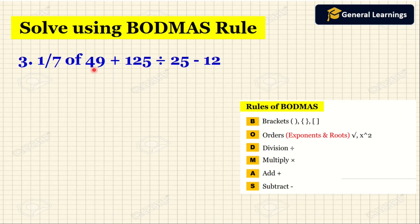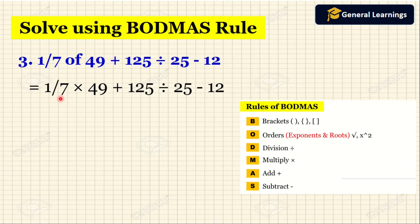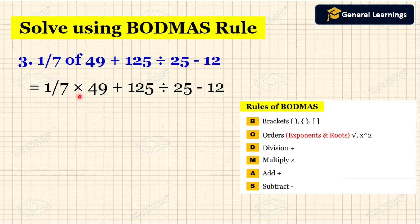Now we will see another example. Here they have given: 1 by 7 of 49 plus 125 divided by 25 minus 12. In this question "of" means multiply, so the question becomes 1 by 7 multiplied by 49 plus 125 divided by 25 minus 12. The operations given are multiplication, addition, division, and subtraction.